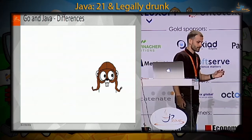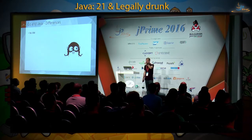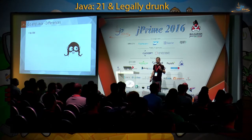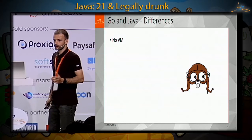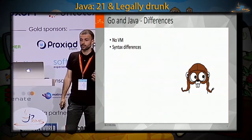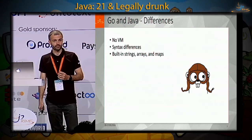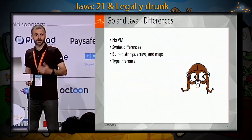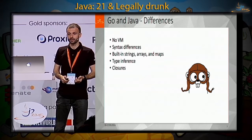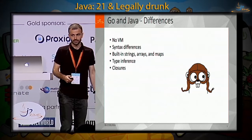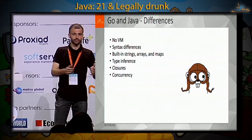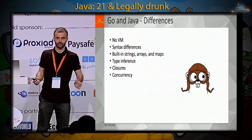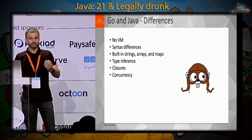Go has some things that Java doesn't have. First, Go doesn't have any VM — all code is compiled to native code and executed on the processor directly. There are some syntax differences; there are built-in strings, arrays, and maps in Go. Go has type inference, a very convenient feature. Go has real closures — we'll see the difference. Go also has concurrency built into the language in a very interesting way, not to be found in almost any other programming language.